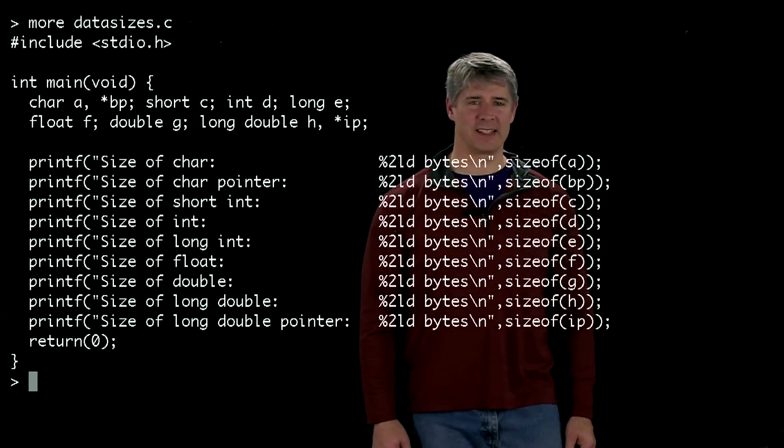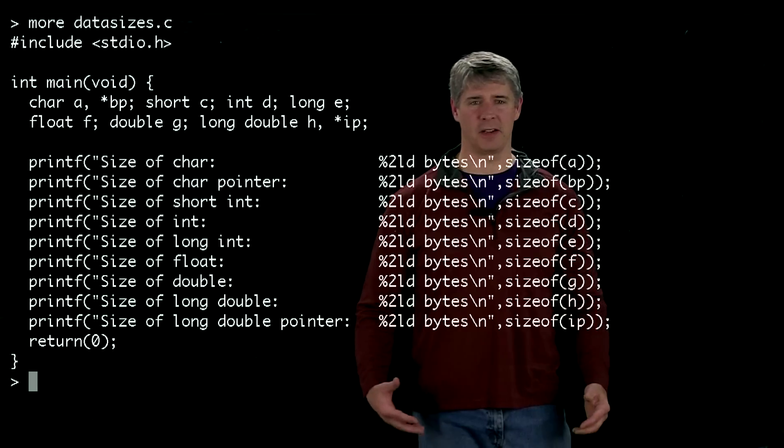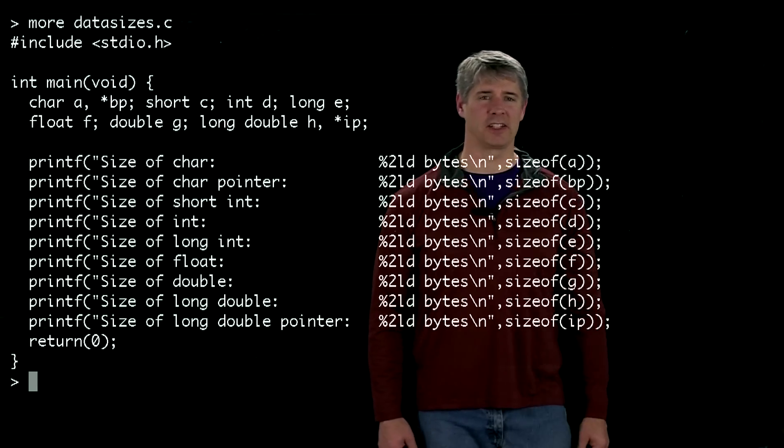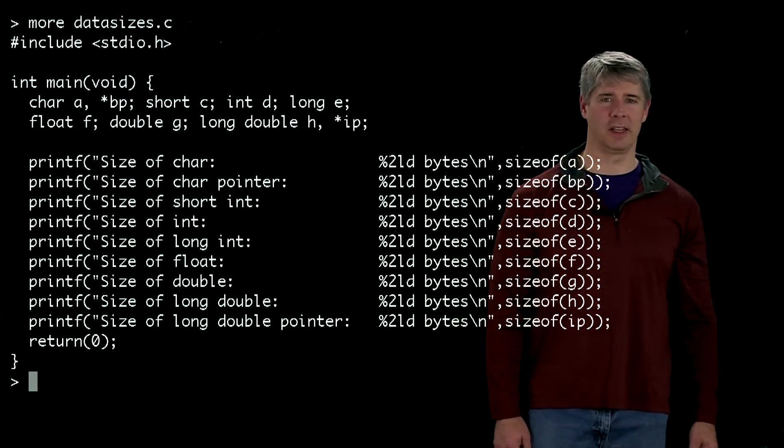Our next simple program, datasizes.c, simply tells us how many bytes it takes to represent certain common data types.